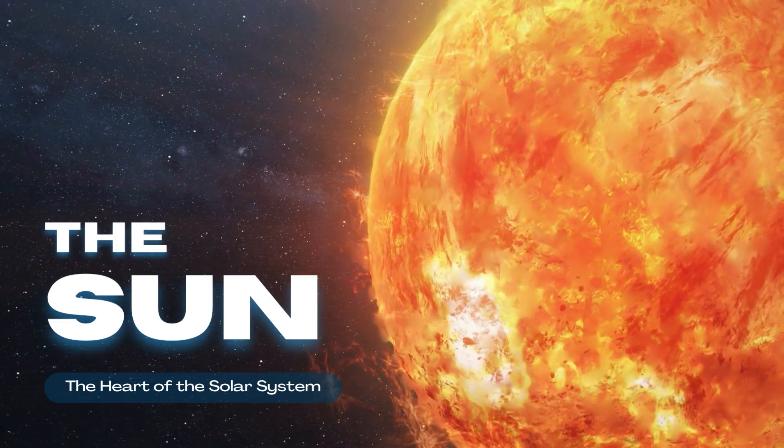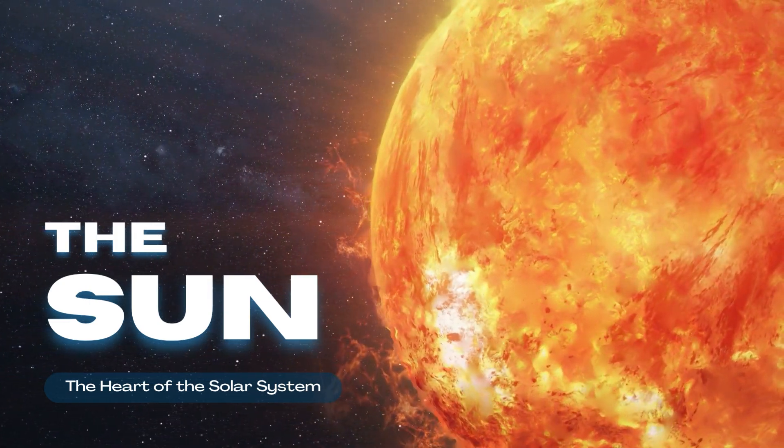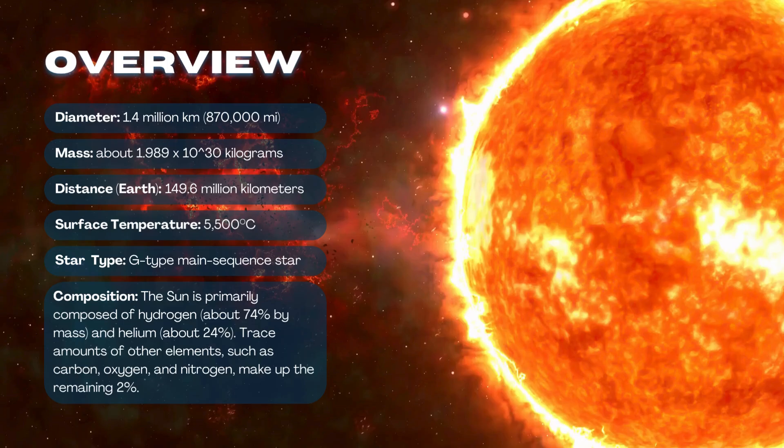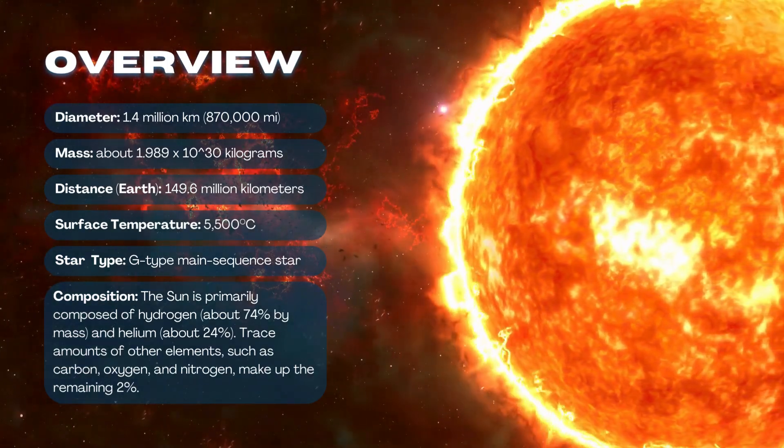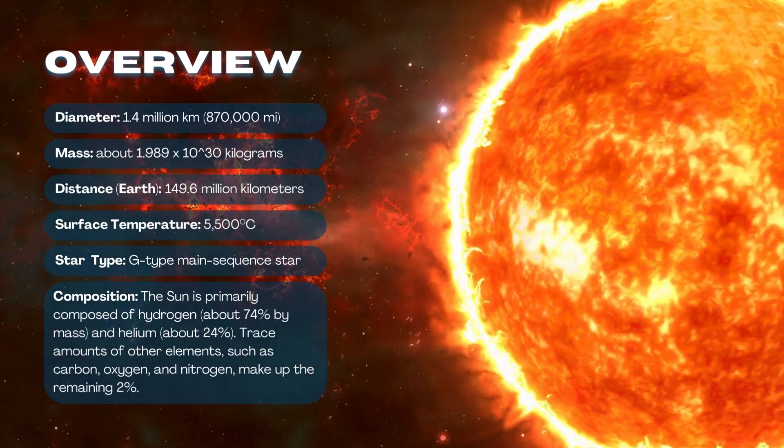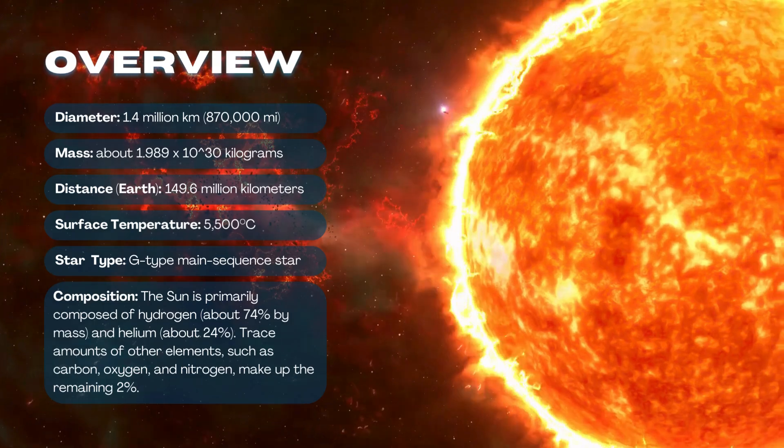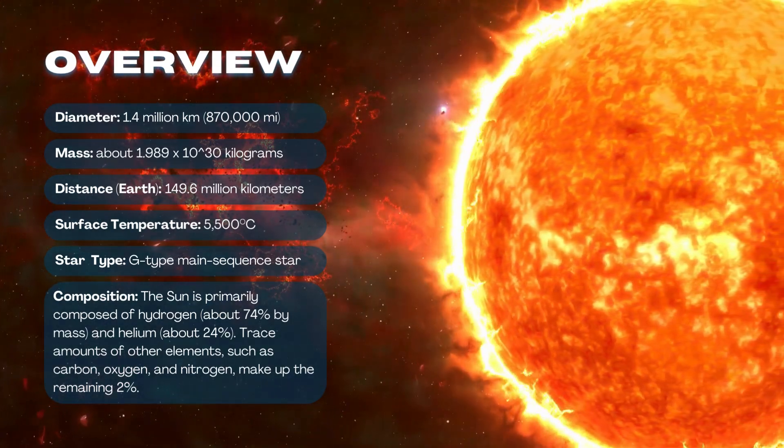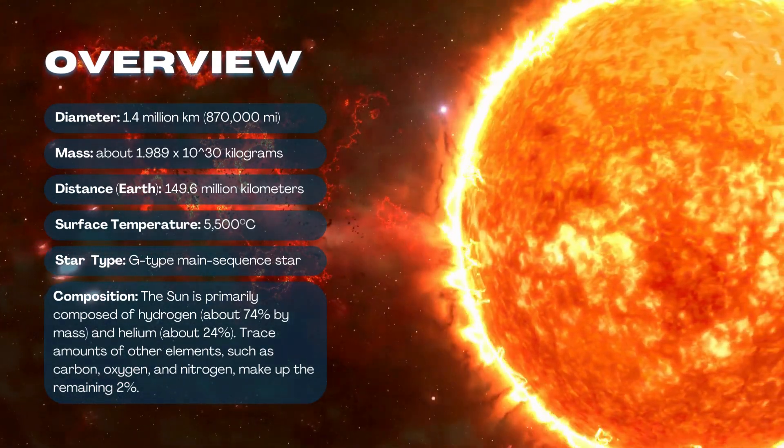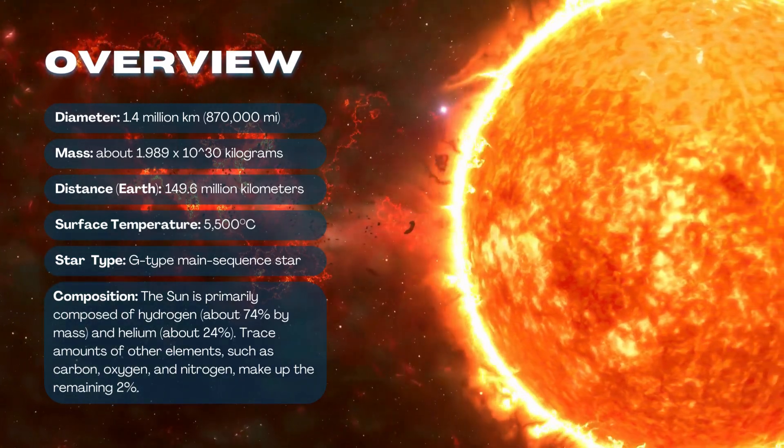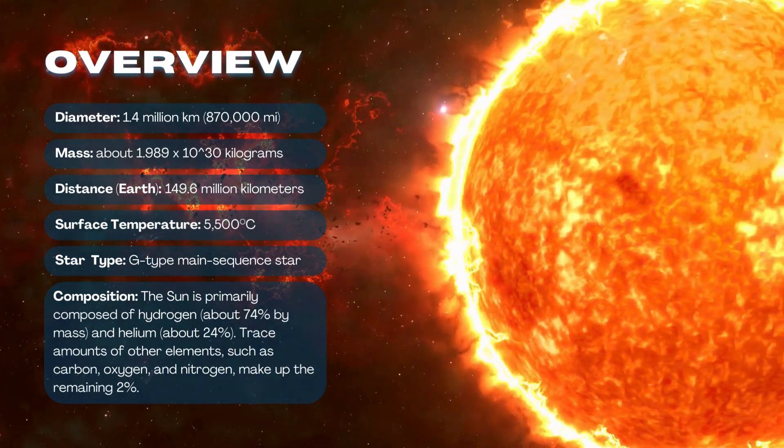The sun, the heart of the solar system. Composition: The sun is primarily composed of hydrogen, about 74% by mass, and helium, about 24%. Trace amounts of other elements, such as carbon, oxygen, and nitrogen, make up the remaining 2%.